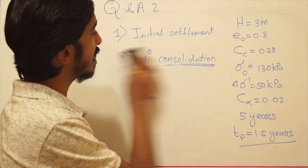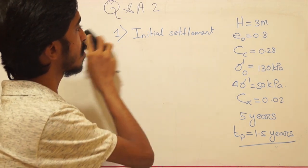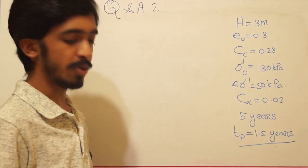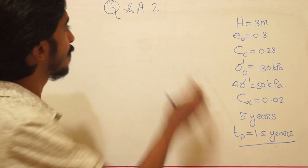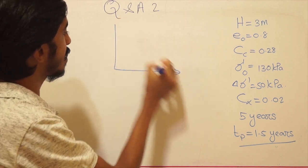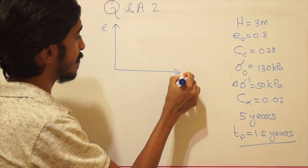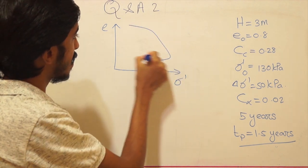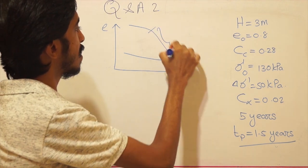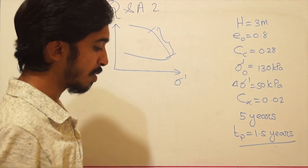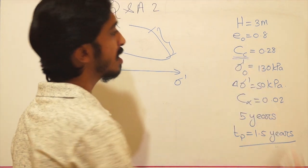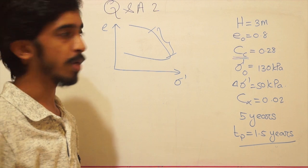There is no detail regarding the initial settlement so we don't need to calculate that. We can directly move on to the primary consolidation part. From the graph of void ratio versus effective stress, the virgin curve part allows us to find the change in void ratio. Here I am considering the virgin curve part because only Cc applies in the normally consolidated state.